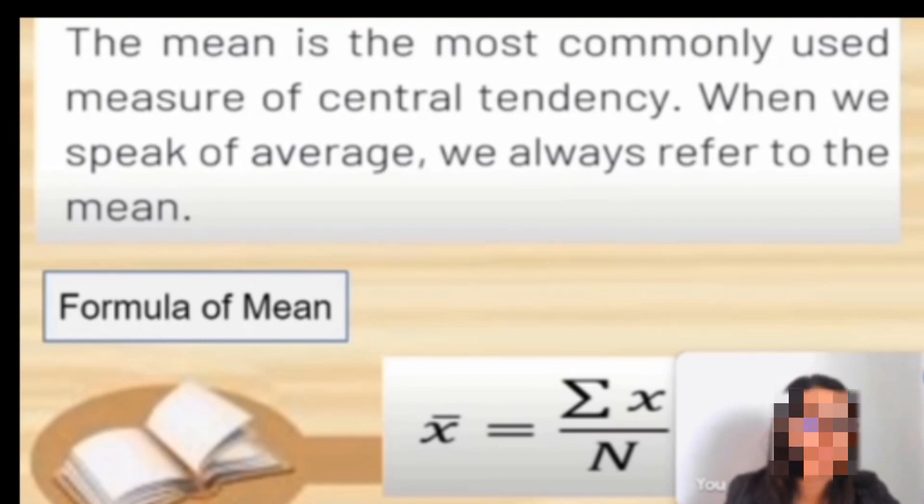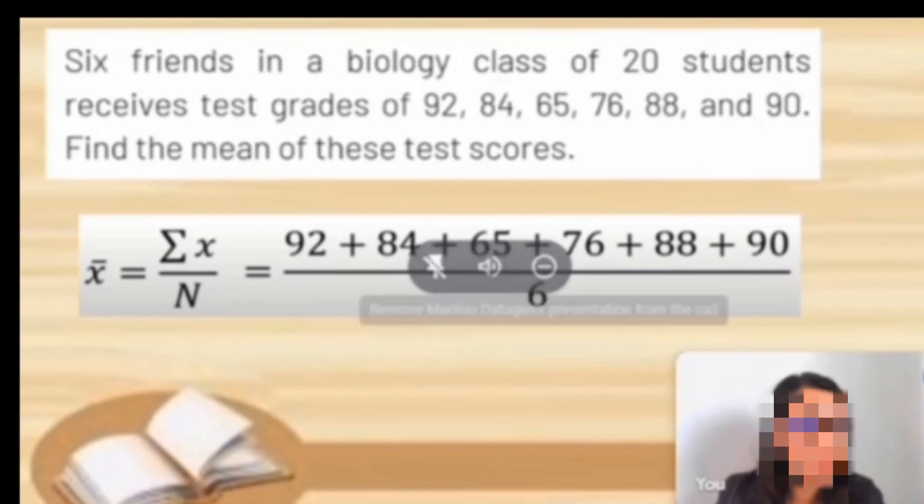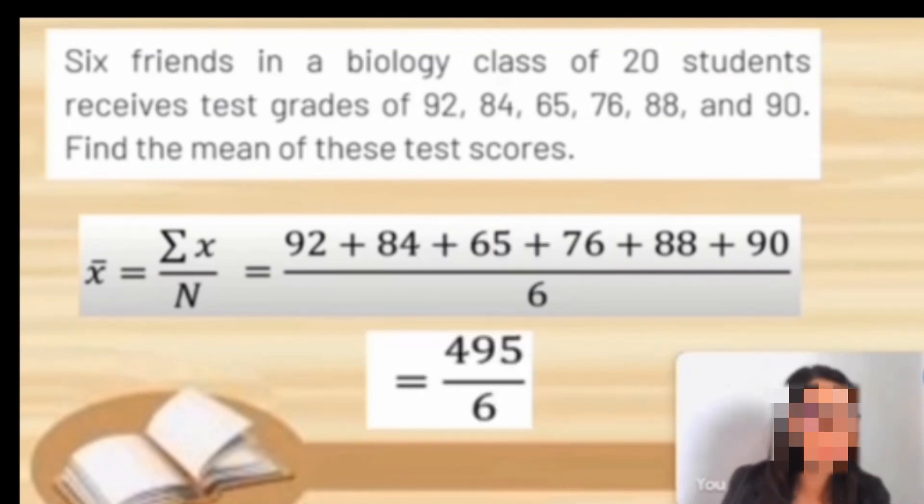This is our formula of mean: summation of x over n. X represents the numbers and n is the total number of the data. For example, six friends in a biology class of 20 students receive test grades of 92, 84, 65, 76, 88, and 90.